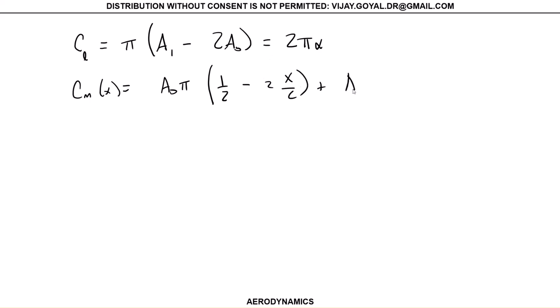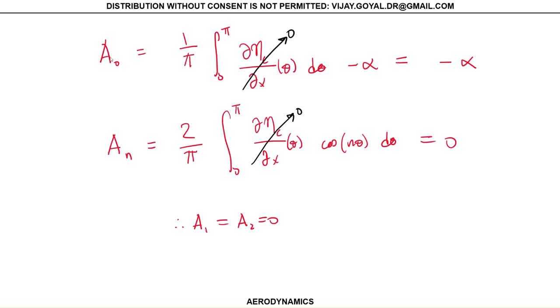c_m(x) = A_s π(1/2 - x/c) + A_n π(x/c - 1/2) + A_s π/4. Since a_1 and a_2 are zero, this goes away and you're left with -απ(1/2 - 2x/c).